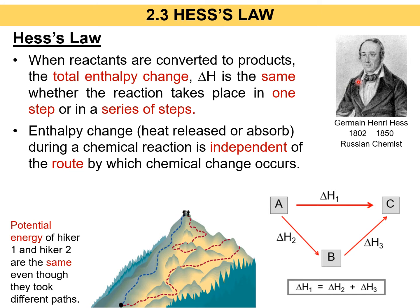Hess Law was invented by a Russian chemist. So when reactants convert to products, the total enthalpy change, delta H, is actually the same, whether the reaction takes place in one step or in a series of steps. Enthalpy change, or delta H, during a chemical reaction is actually independent of the route by which chemical change occurs. For example, consider two hikers — to reach the peak, they take different paths, but their potential energy is still considered the same, although they took different paths.